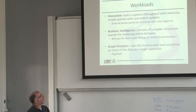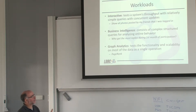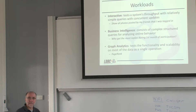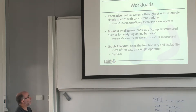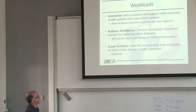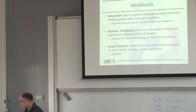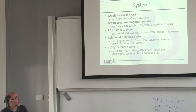We analyzed different workloads. There are three clear workloads. First is the interactive — classical queries in a Facebook interface, like 'show photos posted by my friends.' Small queries, relatively frequent, a lot of concurrency, small but very frequent updates. Second is business intelligence: more complex, structured queries where you analyze a larger part of the network, also affected by ongoing updates. And finally, classical graph analytics with larger scale operations inside the graph, such as computing the complete PageRank of the network.